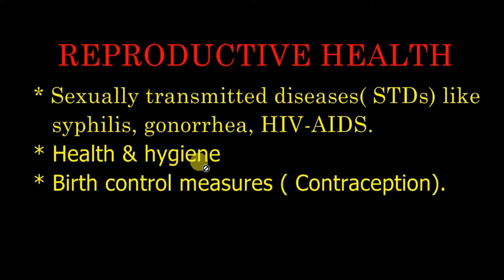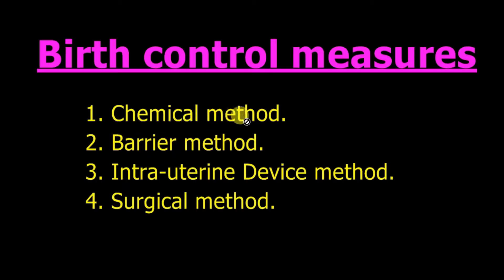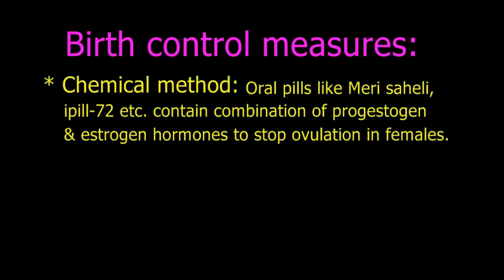The third concern is birth control measures, or contraceptive measures. The methods of birth control include the chemical method, barrier method, intra-uterine device method, and surgical method. Let's take them one by one, starting with the chemical method.